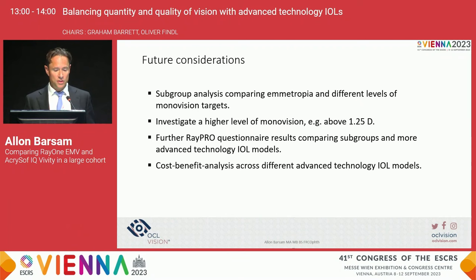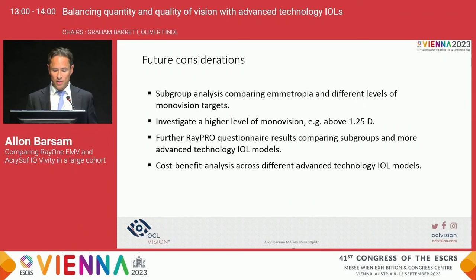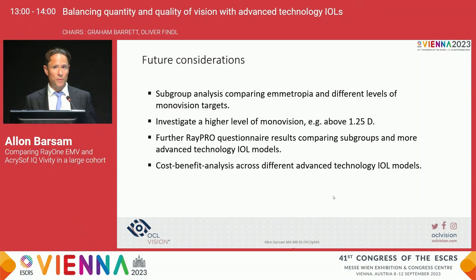What are the future considerations? We need to do a subgroup analysis to compare like for like with equivalent amounts of myopic target in the non-dominant eyes. We want to investigate higher levels of monovision — 1.25 diopters or more — which may be better tolerated given the higher satisfaction levels and may achieve equal reading vision compared with the Vivity. We want to drill down into questionnaire results to find causes of non-satisfaction and look more carefully at dysphotopsia. Also very relevant is a cost-benefit analysis, because the cost difference between the Ray-1 EMV and the Vivity lens, given the very modest difference in how they perform, is enormous.